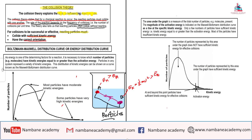They must move towards each other with sufficient kinetic energy, but most importantly, they must collide with the correct orientation. These two — particles must collide with sufficient kinetic energy and must collide with the correct orientation — are what we call the basic principles of the collision theory. If they do not have sufficient kinetic energy or the correct orientation, they will not react.